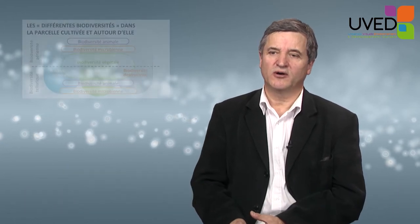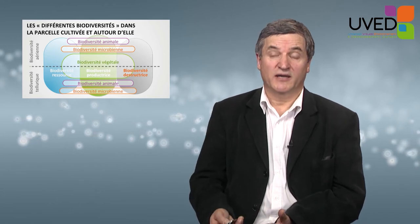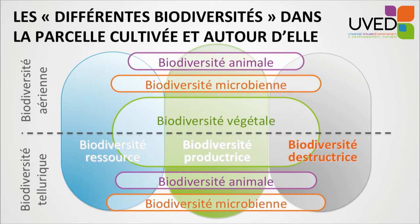In cultivated plots, part of the biodiversity is detrimental for production. We have attackers — the destructive biodiversity made of parasites, diseases: viral, fungal, and bacterial diseases, predators, birds, rats, worms, caterpillars, and all kinds of agricultural plagues and competitors, such as other plants, which decrease the yield of cultivated crops.